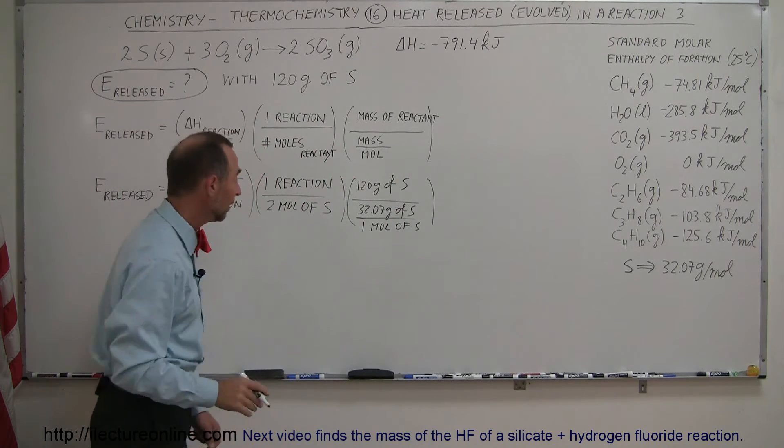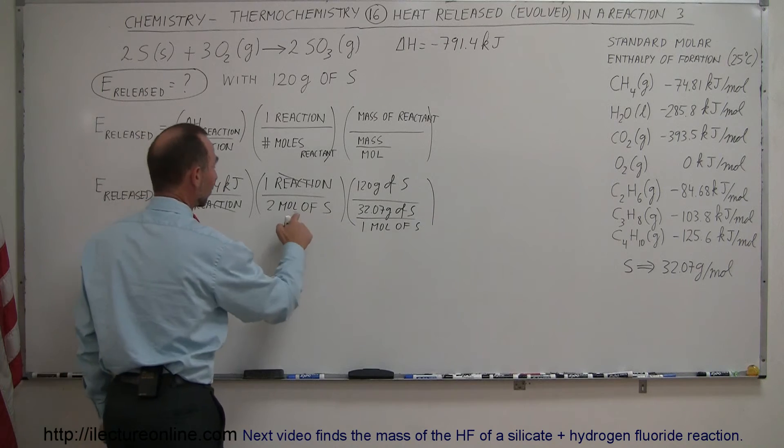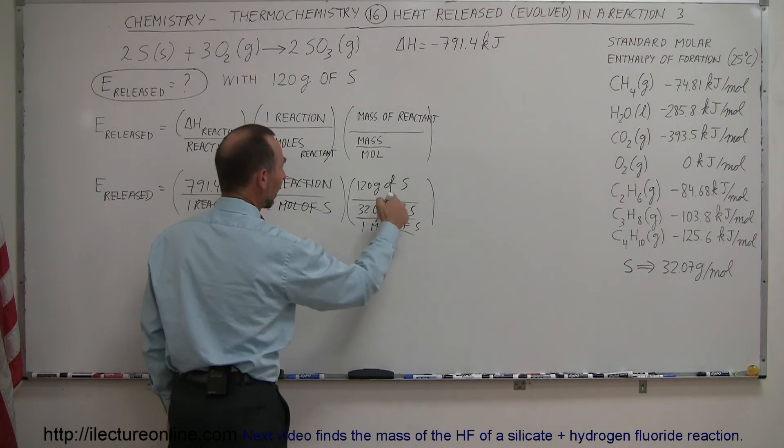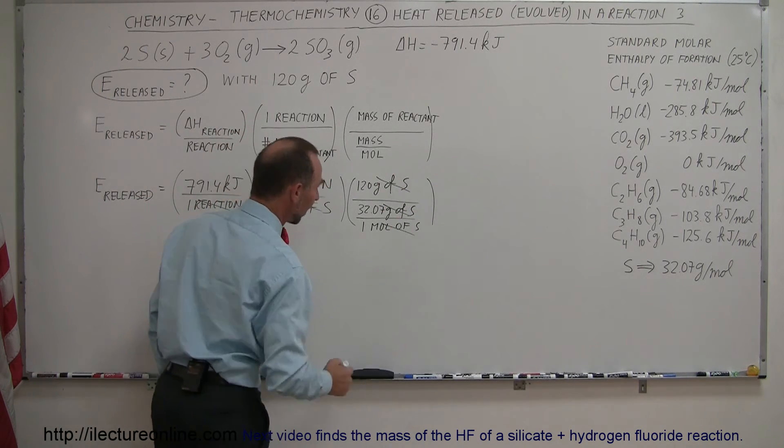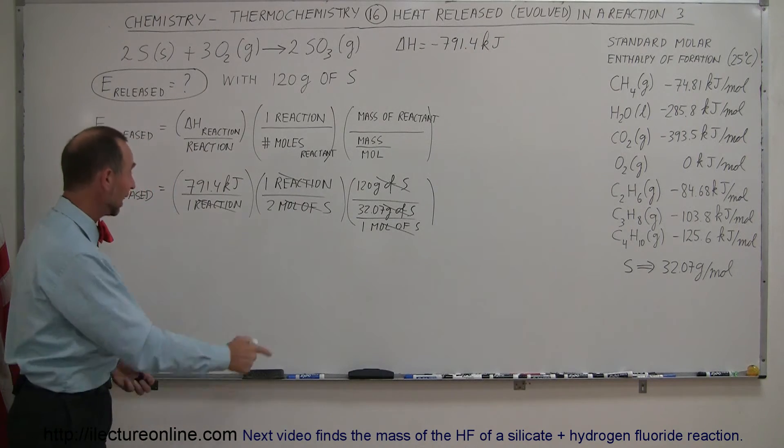So if we write it out like this, you notice then that all these units cancel out. Reaction cancels out, moles of sulfur cancels out, and grams of sulfur cancels out, which leaves us just with numbers and the units kilojoules.